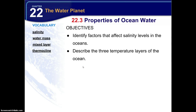We have section 22.3, Properties of Ocean Water. The key idea here is that salinity and temperature are two characteristics of water masses that help scientists study oceans and their behavior.